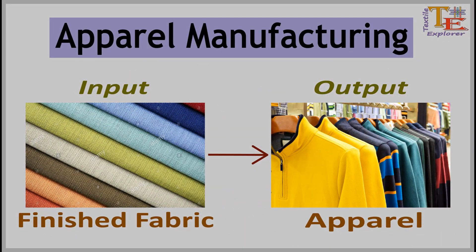In apparel manufacturing, fabrics are cut into shapes and assembled together to make apparels we wear. Garment manufacturing industries conduct this process. The products produced in this process are available in the market as ready-made garments.